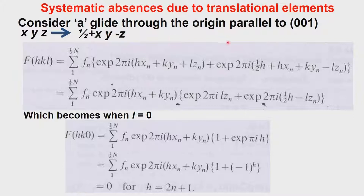We have already seen how many glide operations are possible: a glide, b glide, c glide, n glide, and d glide in a special situation. All these glides will give rise to systematic absences depending upon the projection reflections. It is only the projection reflections which will show systematic absences due to glide planes.